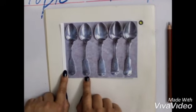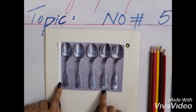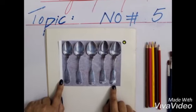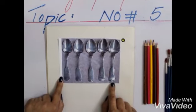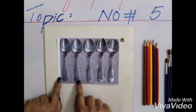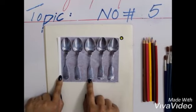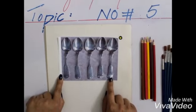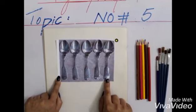1, 2, 3, 4, 5. Let's count them again. 1, 2, 3, 4, 5. 5 spoons.